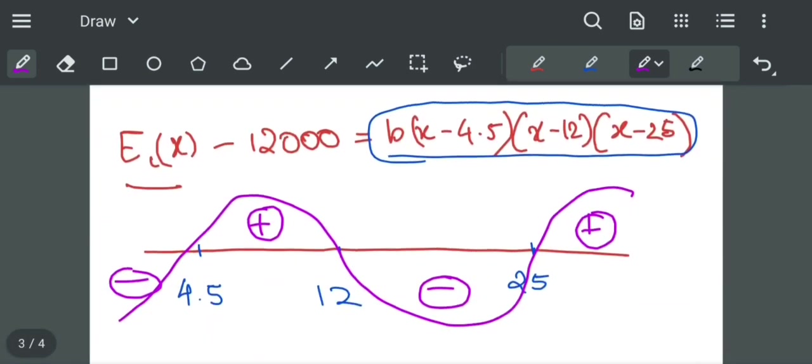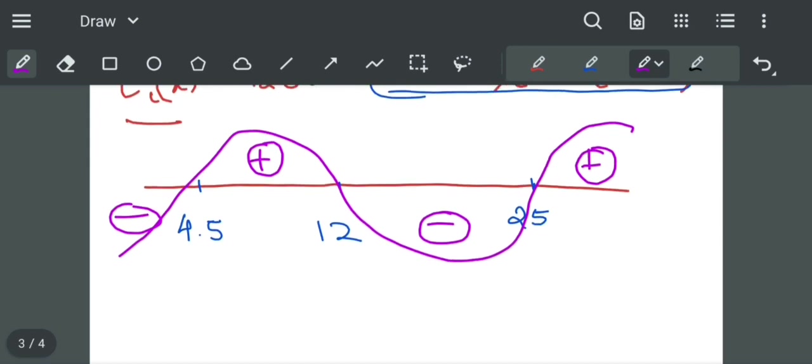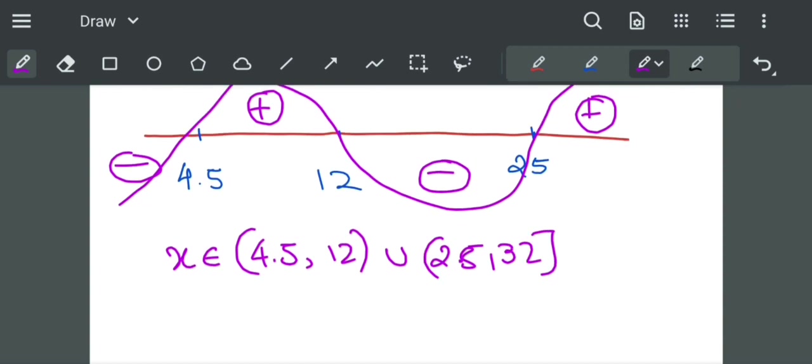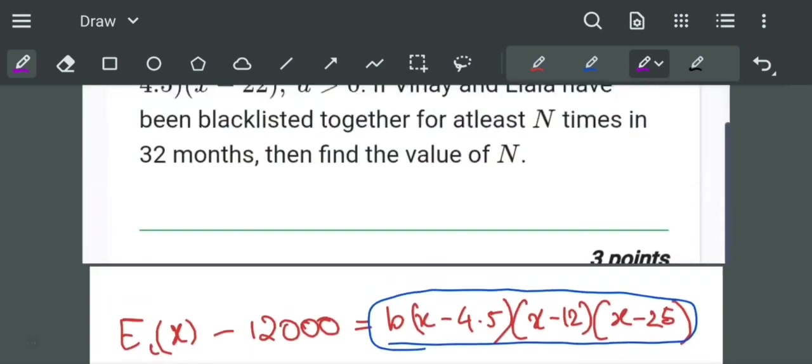For the values of x belonging to 4.5 to 12 union 25 to 32, the company blacklists this person named Liala.